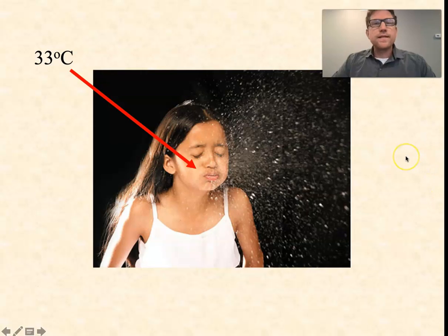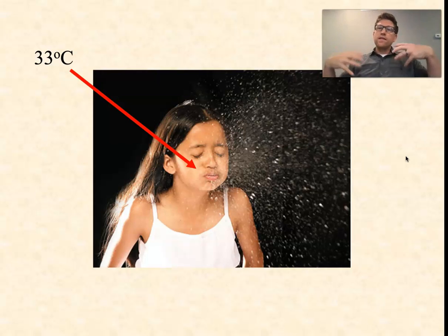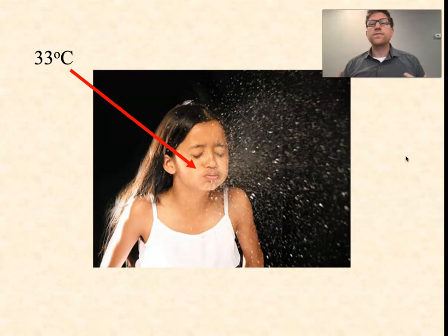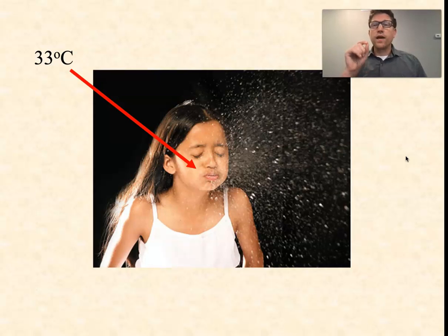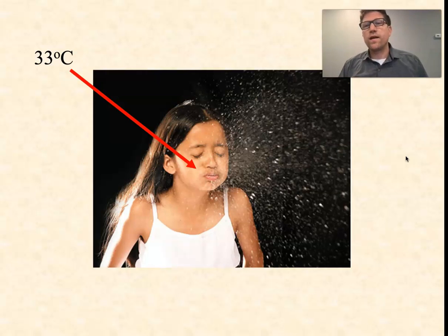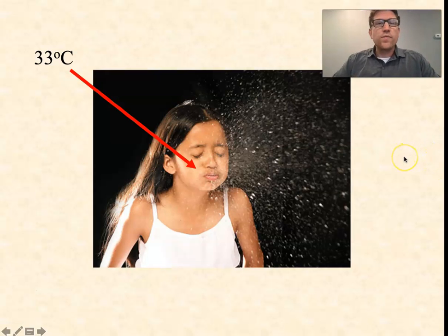33 degrees Celsius is the temperature inside our noses. The core of your body is at 37 degrees Celsius. Most microorganisms are adapted to 37 degrees Celsius, but coronavirus is actually adapted to 33. So the location where they find the most abundant receptors to attach to — the nose — is also the location where they are best adapted to the temperature. This is why we don't tend to see coronaviruses going a lot deeper than the nose.